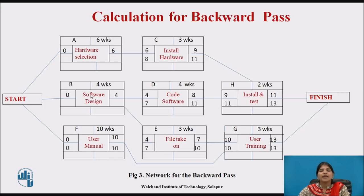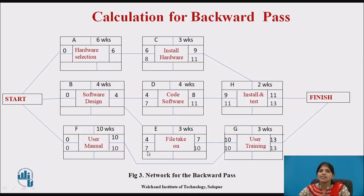B is the precedent of both D and E. The latest start dates of D and E are both 7, so we write down 7 as the latest finish for B. Then 7 minus 4 gives the latest start of B as 3.